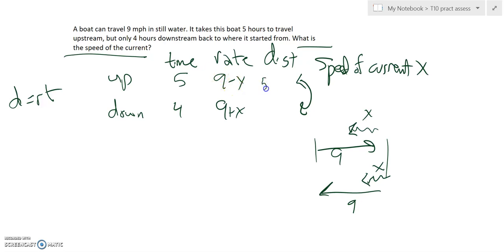So, 5 times 9 minus X. This one would be 4 times 9 plus X. And those distances are the same. So, 5 times 9 minus X should equal 4 times 9 plus X.